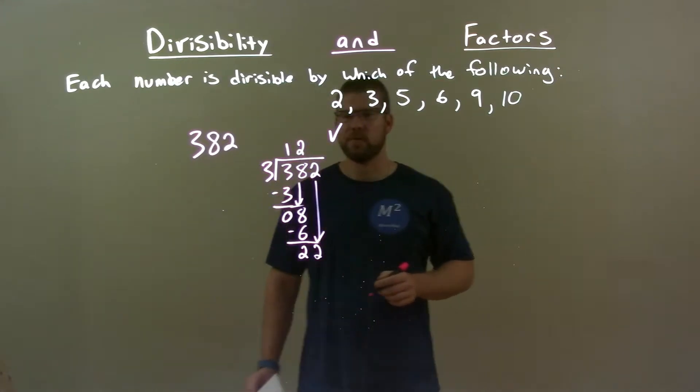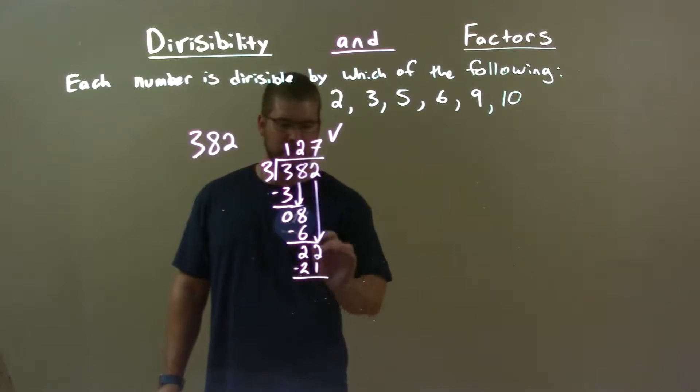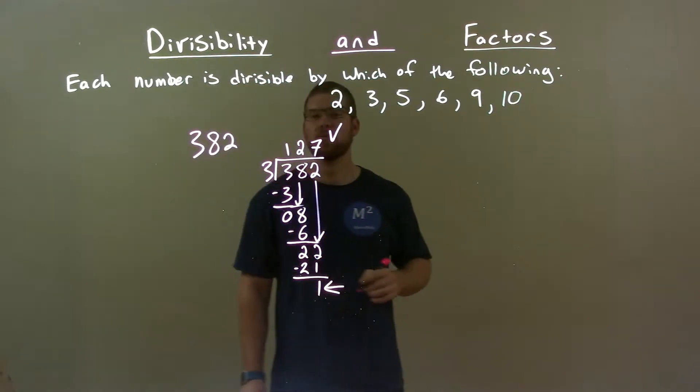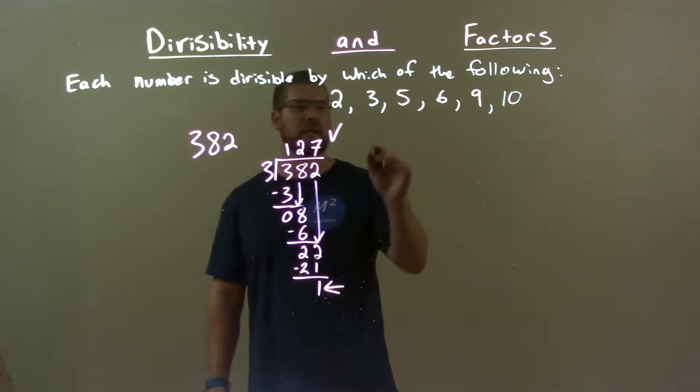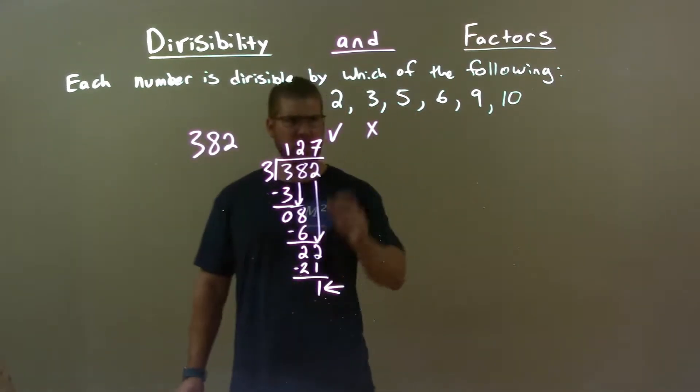Does 3 go into 22? Well, 3 times 7 is 21. Subtract it, we get a 1. Since we have a remainder of 1, 3 does not go in evenly. So there's a no for 3 there. 3 doesn't work.